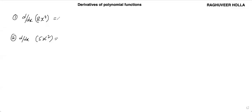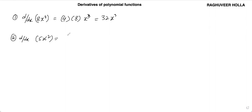Let us find the derivative of this. This is 4 multiplied by 8·x to the power of 3, which is 32x cubed. And this is minus 2 multiplied by 5·x to the power of minus 3, or you can write this as minus 10 by x cubed.